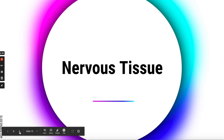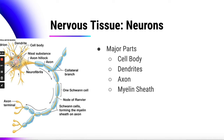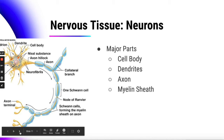Looking at nervous tissue — we did touch on that a little bit in our last unit. The nervous tissue is going to be your neurons. There are different major parts we'll go through and talk about. Here you can see what a neuron would look like.